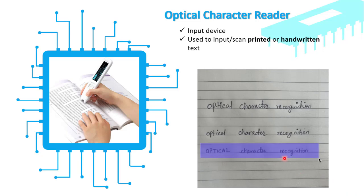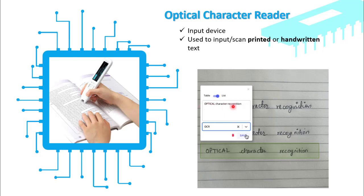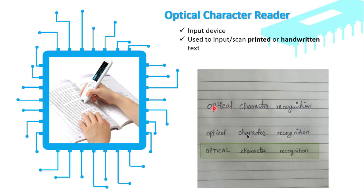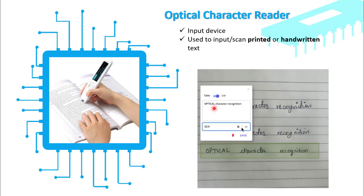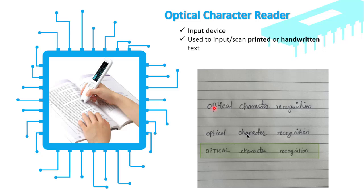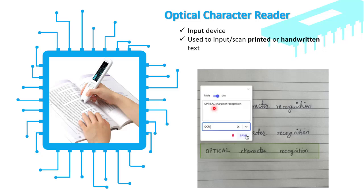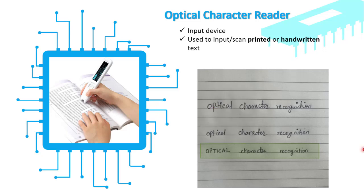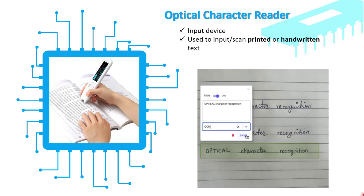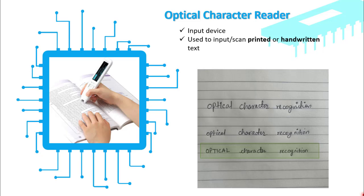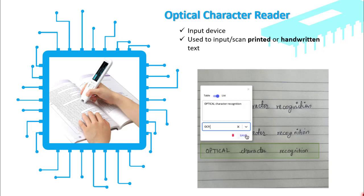OCR will read the handwritten text. You can see an example of handwritten text which you can input into your computer — it will be read and converted into characters. For example, if you have a written letter 'A', OCR can recognize its shape and convert it into typed form in your computer.